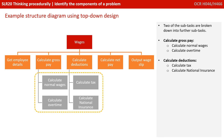Two of the sub-tasks are broken down into further sub-tasks. For example, calculate gross pay is the result of two separate actions: calculating the normal wages and also calculating overtime. In a similar way, calculate deductions is made up from first calculating any tax and then calculating any national insurance.